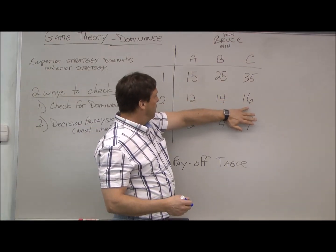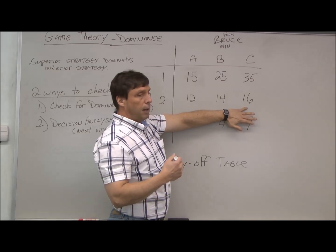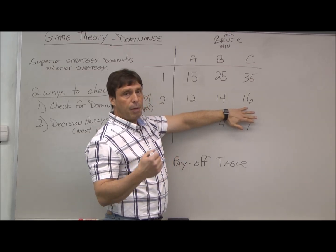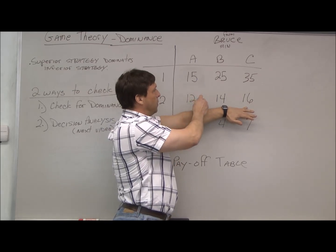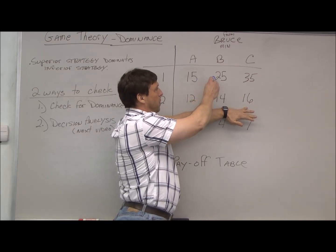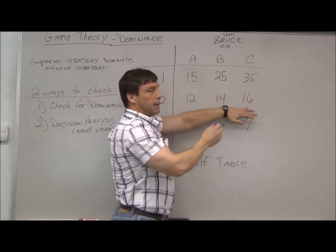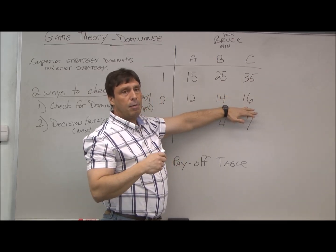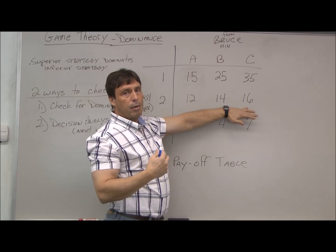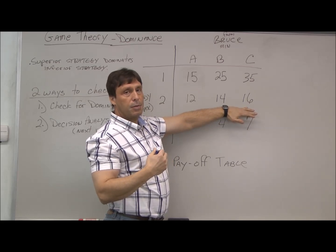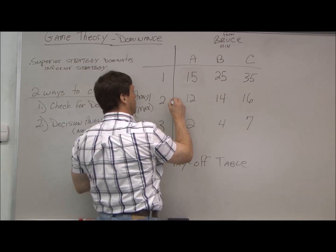Let's compare strategy one and two. Andy's the maximizer, so he wants the maximum payout. 15 is greater than 12, 25 is greater than 14, 35 is greater than 16. So Andy would always choose strategy one over strategy two — strategy one dominates strategy two.